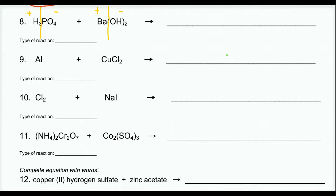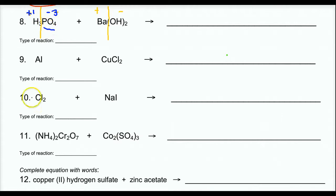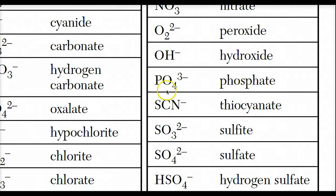What we should do — and I think it's really good practice — is write the exact charges. Now, if you didn't know that hydrogen likes to become plus 1, you could look that up in your reference table. Phosphate you may not know is negative 3. I go to my reference table E, and there it is: PO4, negative 3.